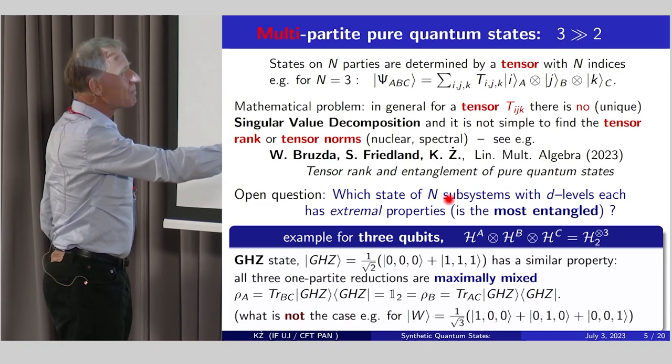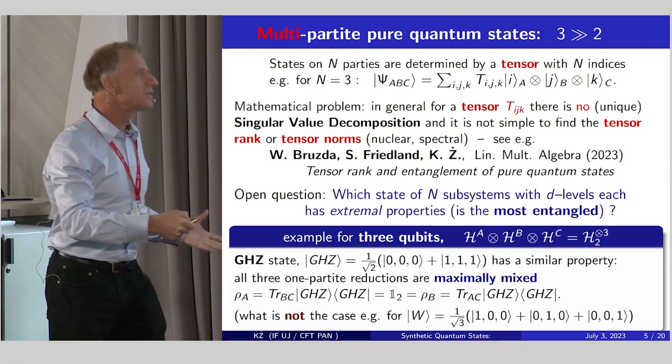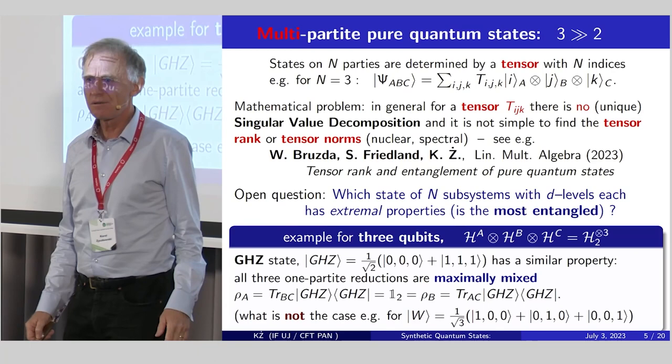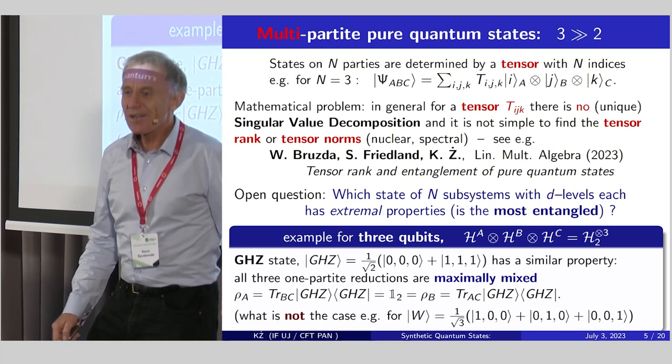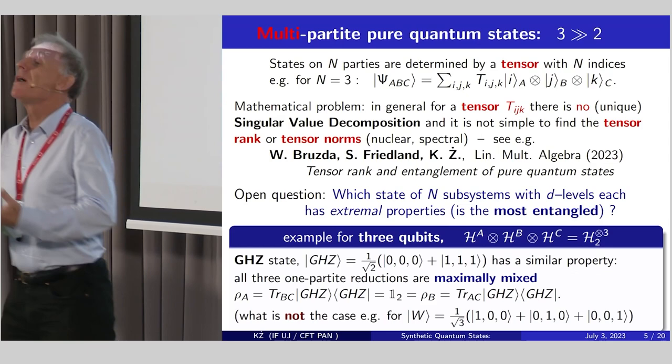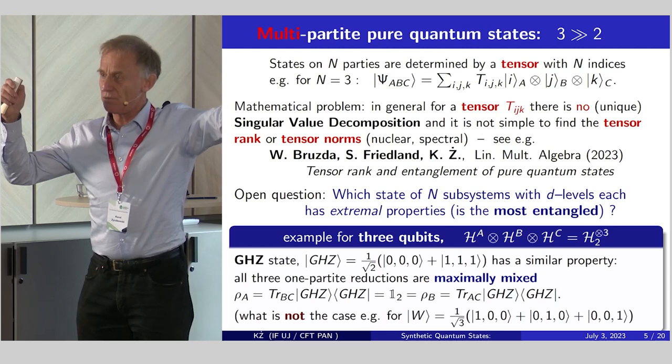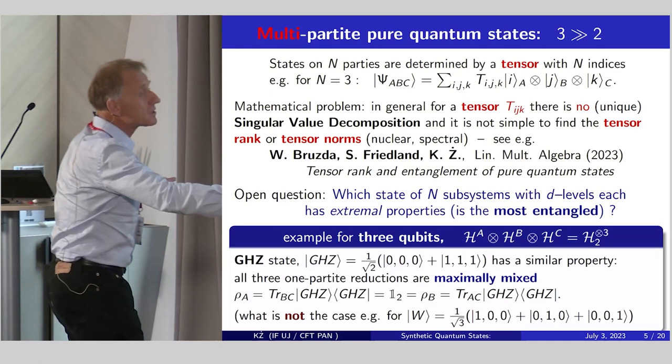In short, the properties of tensors, if you have many indices, determine the entanglement properties of such pure states. There are only pure states of multi-partite systems. And then there appear a simple question, a natural question. If you have a general case of N subsystems with d levels each, which states has extremal properties in the sense that it is the most entangled? So how do you think? What is the answer? No ideas? Basically, I don't know the answer. Why? Because it depends.